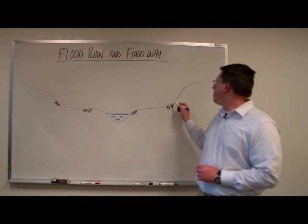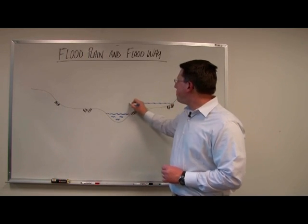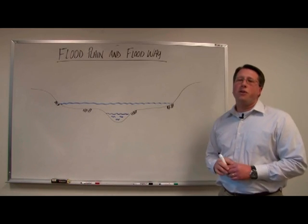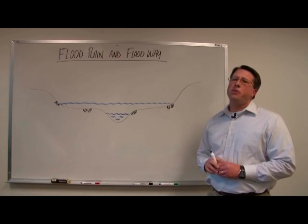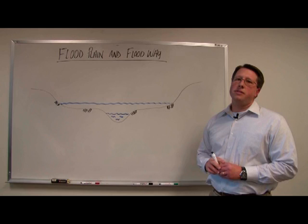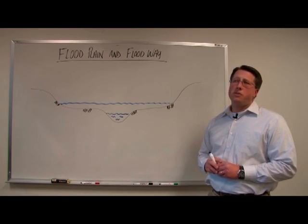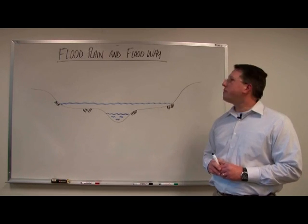The floodplain is the nearly flat area adjacent to rivers and streams that is naturally subject to flooding. Flooding can occur under many circumstances, but generally we classify the floodplain as that area at risk to flooding from the 1% annual chance event, which was previously referred to as the 100-year flood.